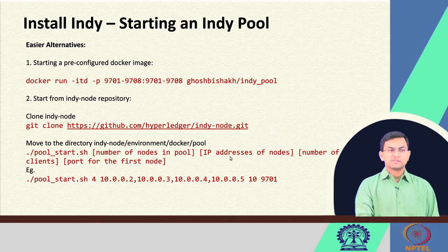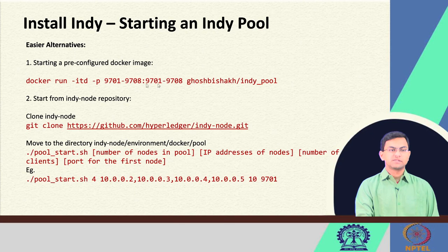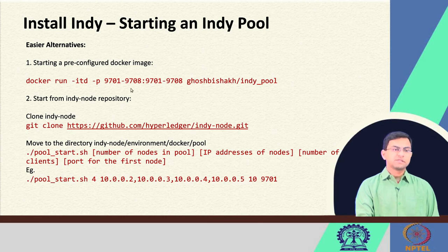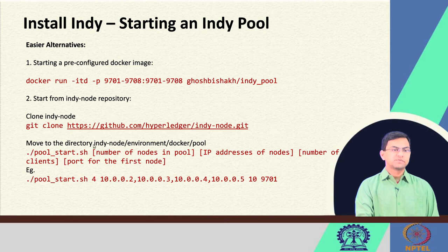There are alternative ways of starting the Indy pool. We have already created an Indy pool image so it is easier to start. You can use a single docker run command with the port mappings to directly start up a new Indy pool with four Indy nodes running on those ports. You can also build Indy Node from source to get the latest version.